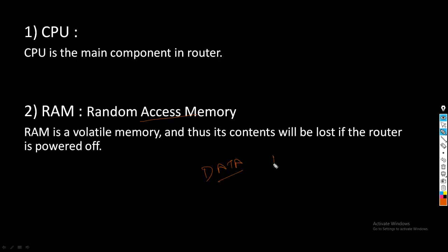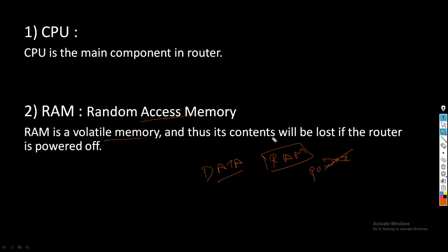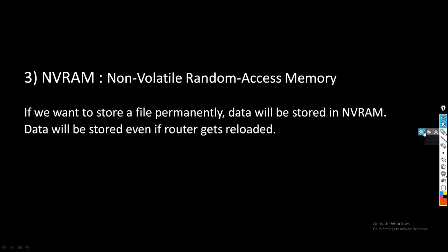If the power goes off, the PC will shut down and data will be erased. So RAM is called volatile memory. Its contents will be lost if the router is powered off.